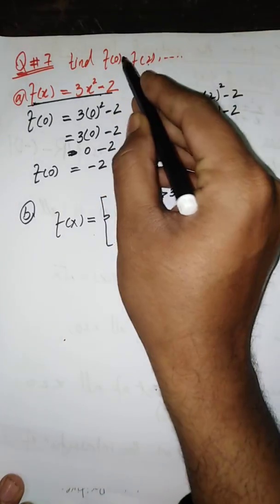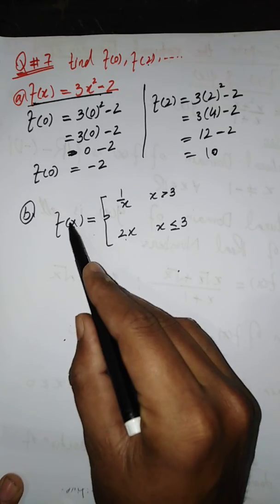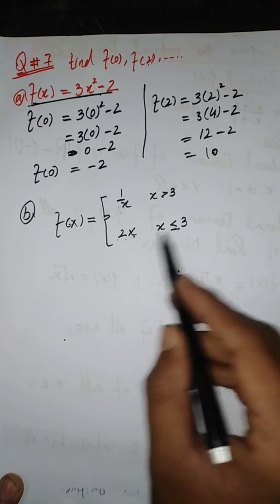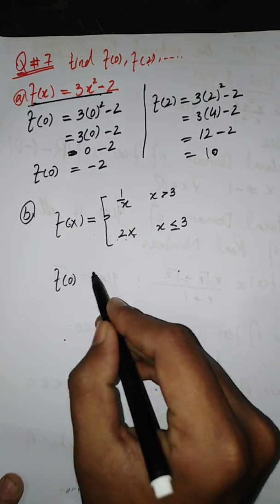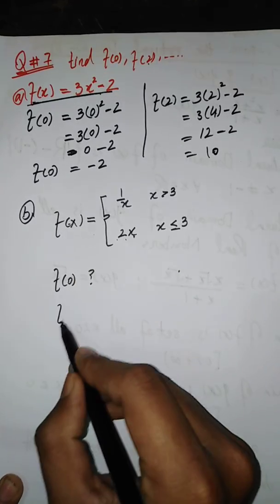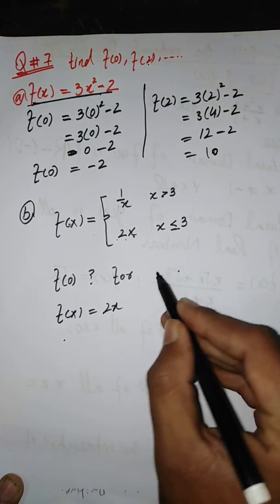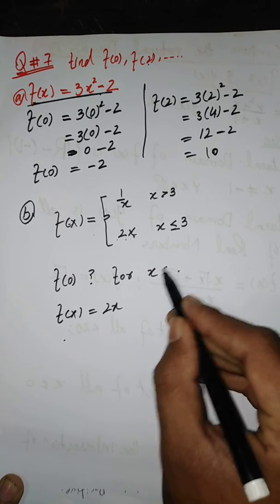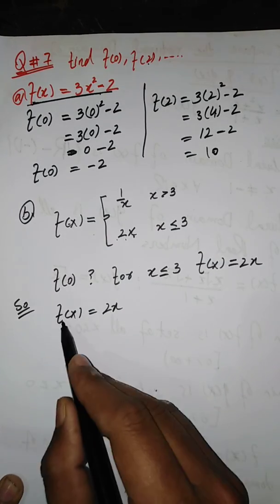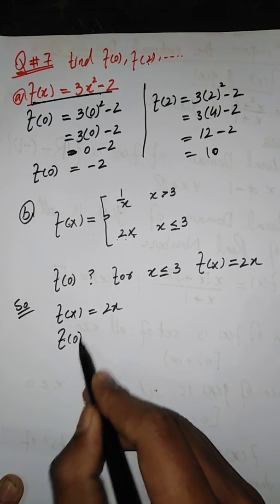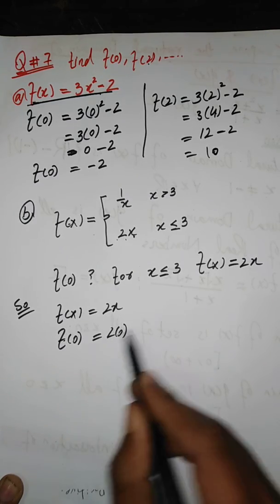For f(0): since 0 is less than 3, we take the function f(x) = 2x, because this function is defined for values less than 3. So we substitute x = 0 into f(x) = 2x, and f(0) = 2 times 0, which equals 0.